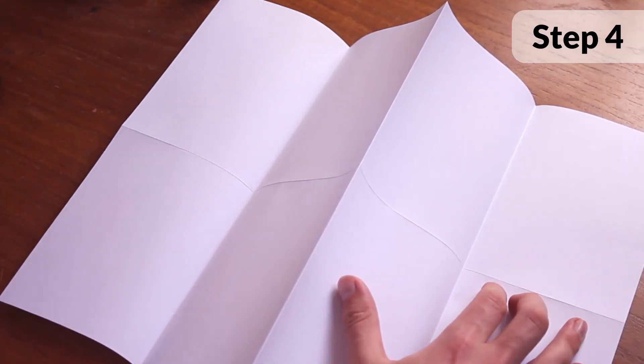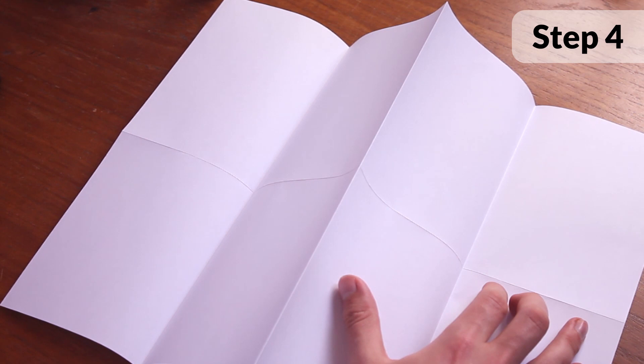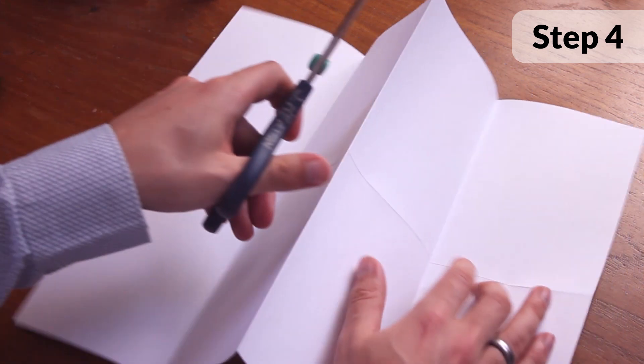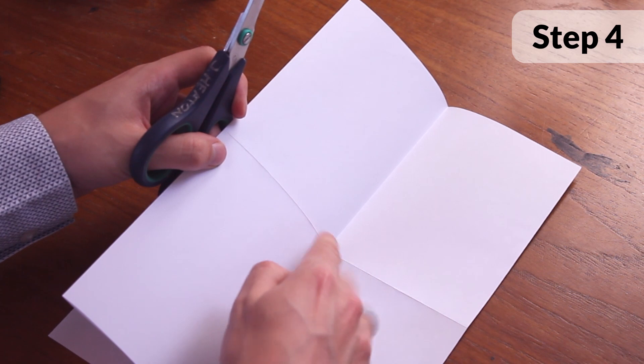Remember that first fold we made? Use scissors to cut along that first fold in the middle of your paper, stopping at the valley of that W.